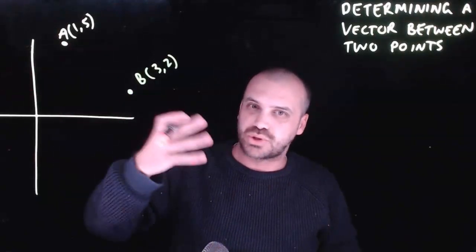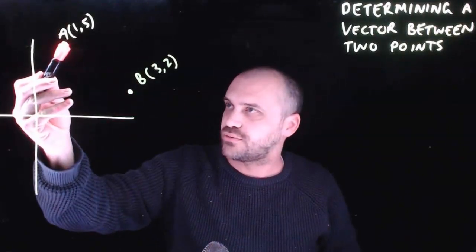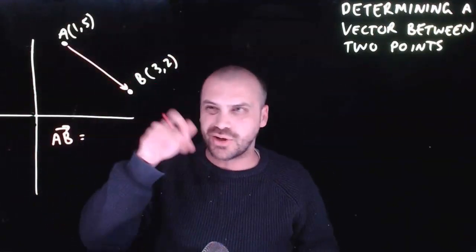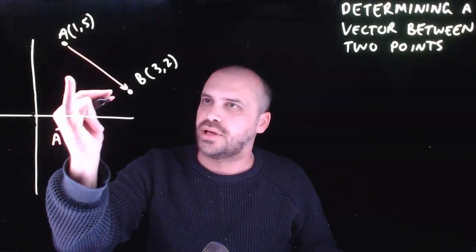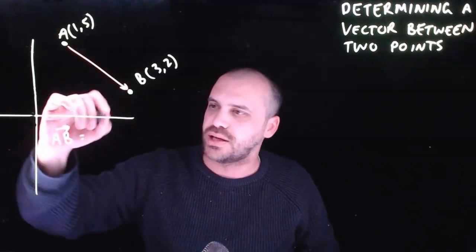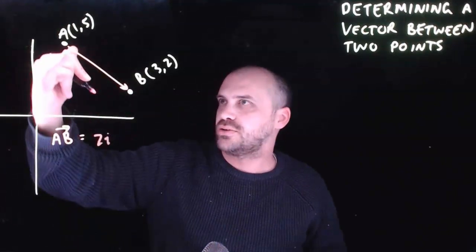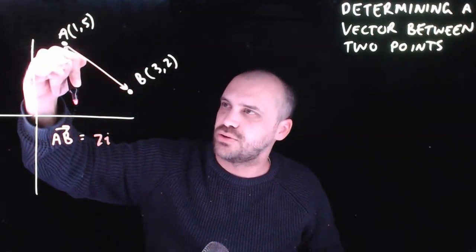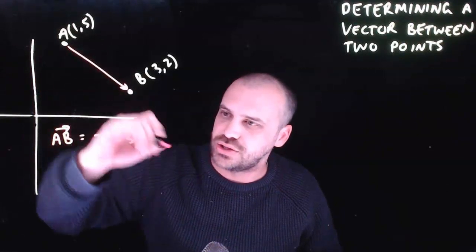What if we wanted to find the vector between two points? For instance, the vector from A to B. We've kept the numbers relatively straightforward so you can eyeball it and figure it out. A is at x=1 and B is at x=3, which means we need to go 2 across — so 2i. And this one's at y=5 and this one's at y=2, so we need to go 3 down — so negative 3j.